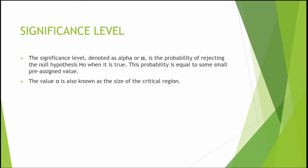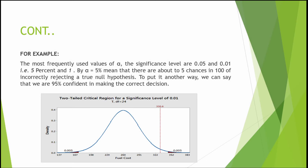The significance level, denoted as alpha, is the probability of rejecting the null hypothesis when it is true. The value alpha is also known as the size of the critical region. The most frequently used values of alpha are 0.05 and 0.01, that is 5% and 1%. An alpha of 5% means there are about 5 chances in 100 of incorrectly rejecting a true null hypothesis, meaning we are 95% confident in making the correct decision.